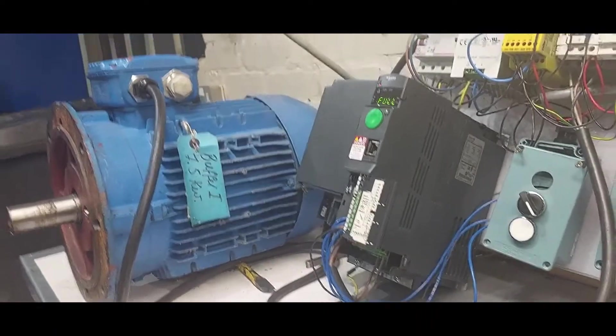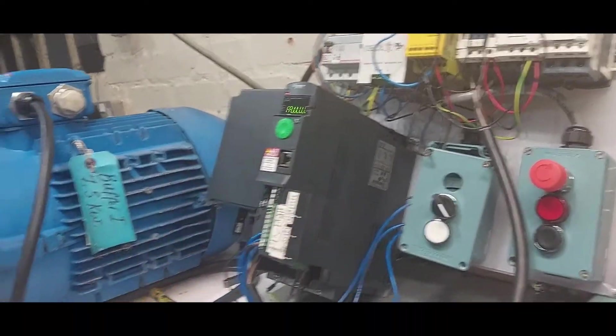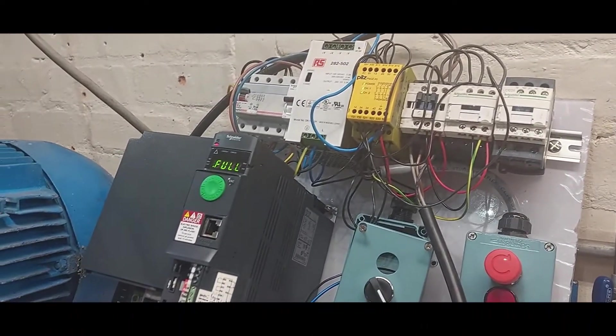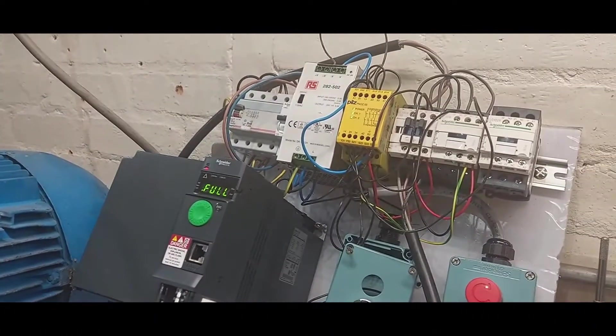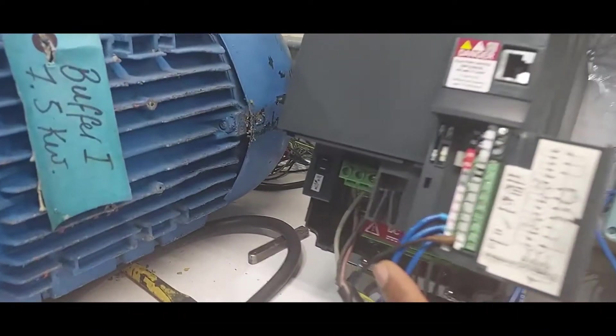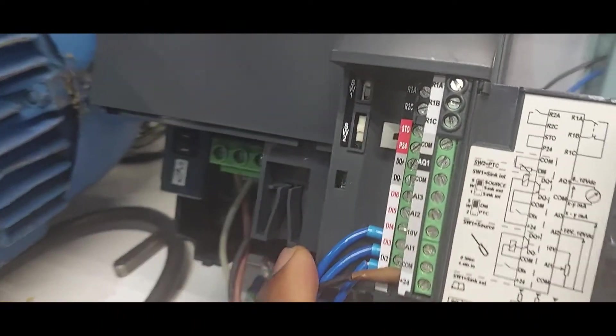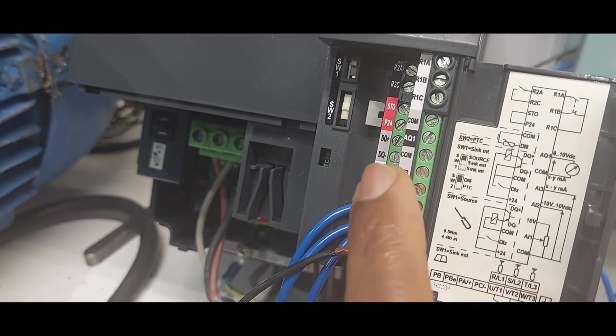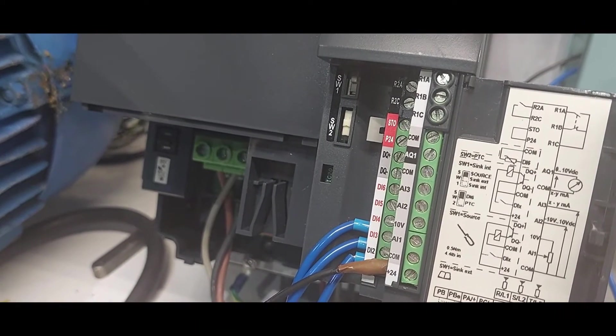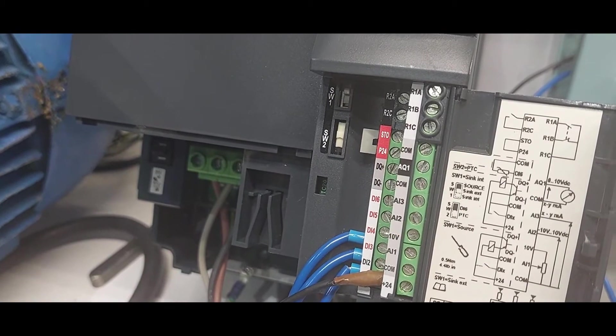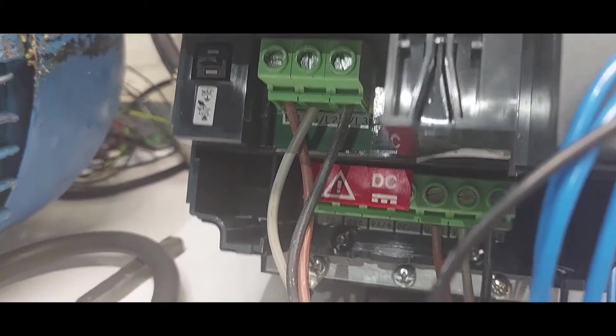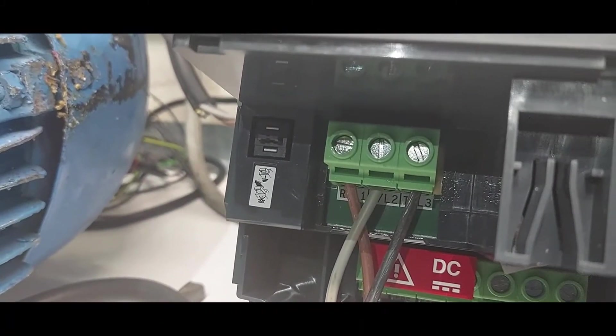It has a keypad, and then it has the terminals, which are the IOs—the input and output terminals. It has digital input and digital output, which they call IOs. And then we have the analog input and output. We have the power terminals and the mains terminals.